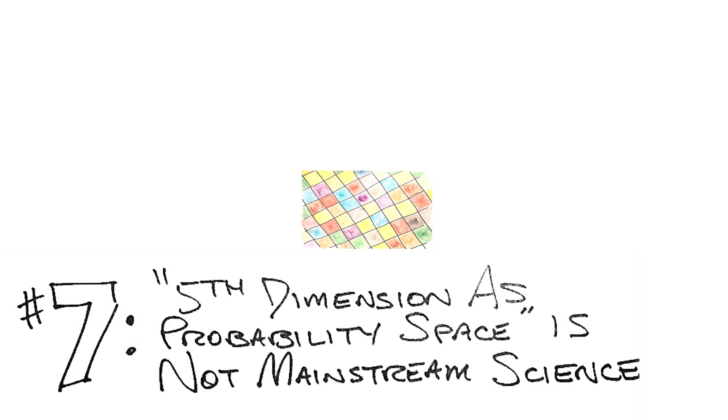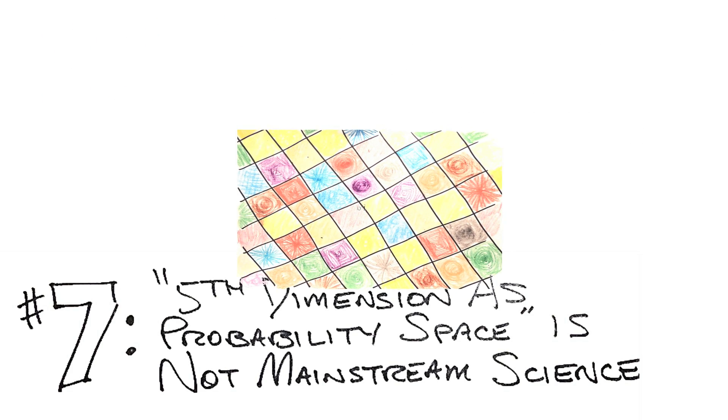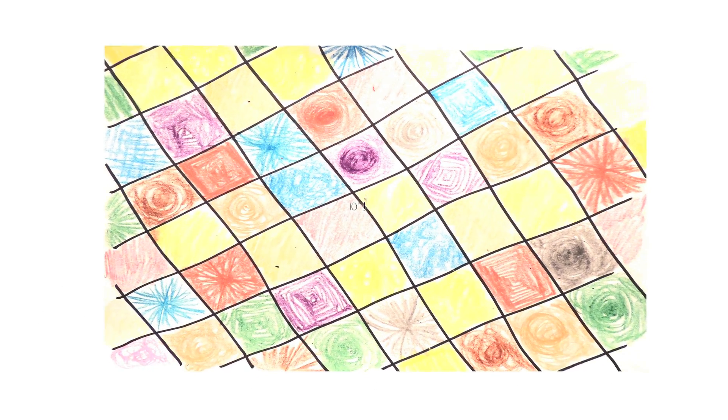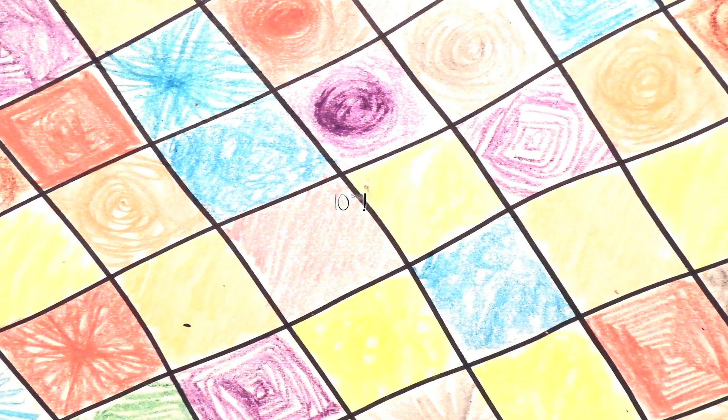Reason number seven: the fifth dimension is probability space has nothing to do with mainstream science. Our goal with this project is to end up visualizing not just a multiverse landscape of the different possible universes - some string theorists say there are ten to the power of 500 of them - but the probabilistic outcomes that quantum mechanics tells us must exist for each of those universes.